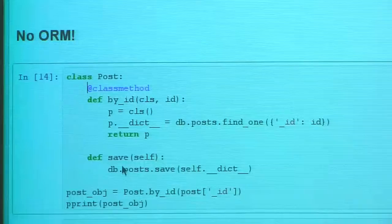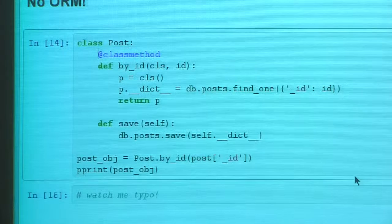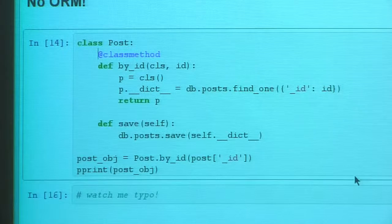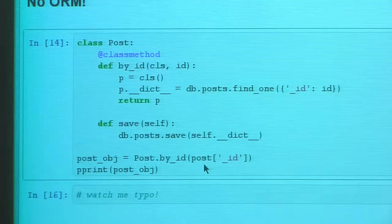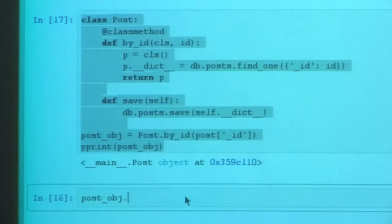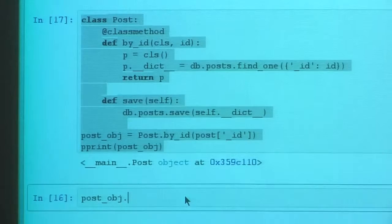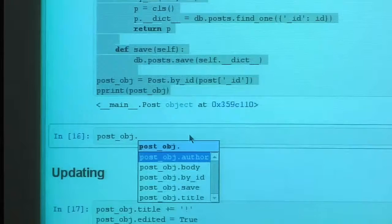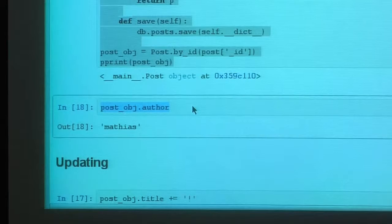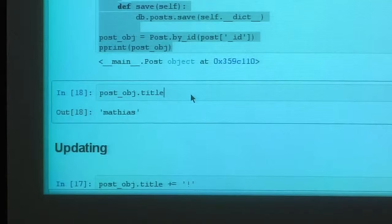Additionally you can implement a `save` method that saves the dictionary back, letting you convert from a dictionary into a class. When you run this, it generates a post object. In a shell with autocompletion, you can hit tab and see the available fields — so you can do `post.title` to fetch things out like that rather than using dictionary syntax.